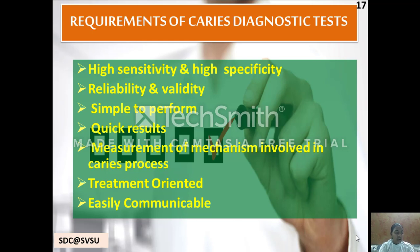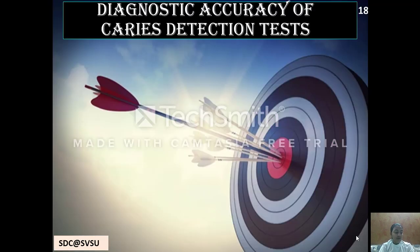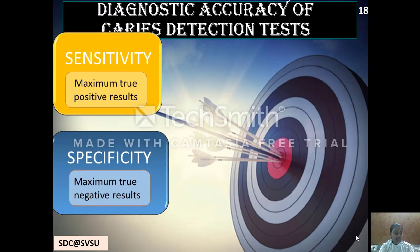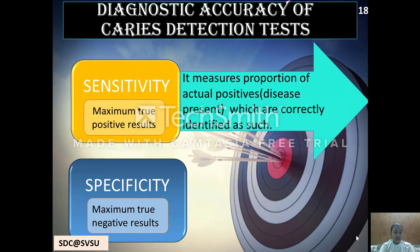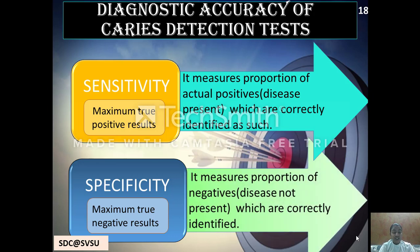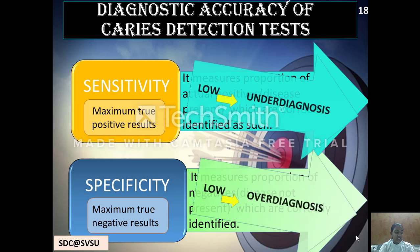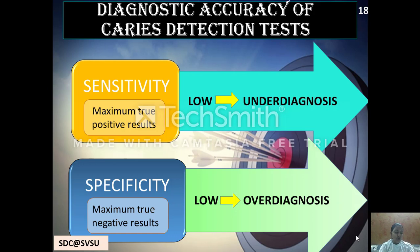The requirements of caries diagnostic tests include that they need to have high sensitivity and high specificity, they should be reliable and valid, simple to perform with quicker results, and should measure caries process and preferably be treatment oriented and easily communicable. Sensitivity is the measure of maximum true positive results — the proportion of actual positives correctly identified. Specificity is maximum true negative results. Low sensitivity leads to underdiagnosis of caries, whereas low specificity leads to overdiagnosis of caries.